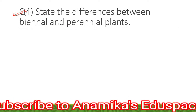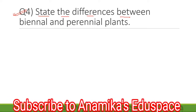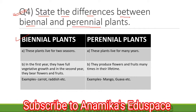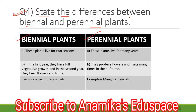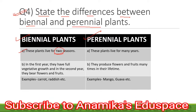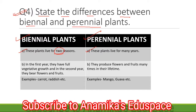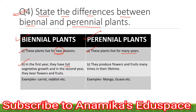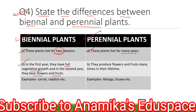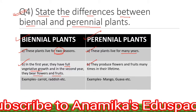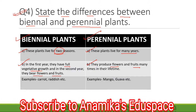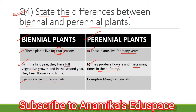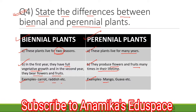Coming to question number 4: State the differences between biennial and perennial plants. Biennial plants versus perennial plants. Biennial plants live for 2 seasons — in the first year they have full vegetative growth, and in the second year they bear flowers and fruits. Perennial plants live for many years and produce flowers and fruits many times in their lifetime. Example for biennial plants: carrot, radish, etc. Example for perennial plants: mango, guava, etc.